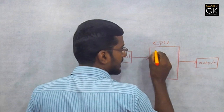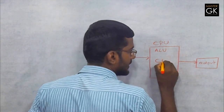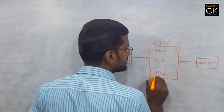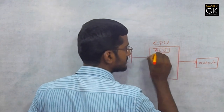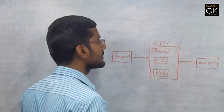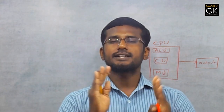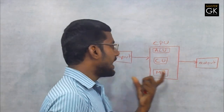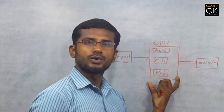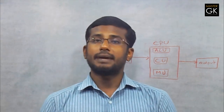All units are Arithmetic and Logical Units, Control Units, and Memory Units. All units have three major units: Input Units, Central Processing Units, and Output Units. These three units are major units.